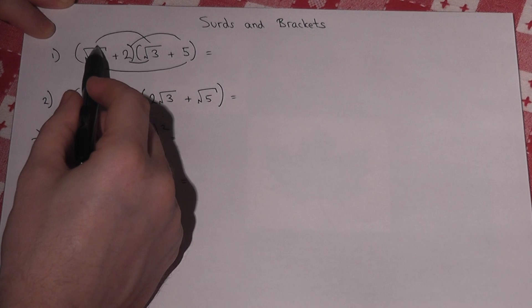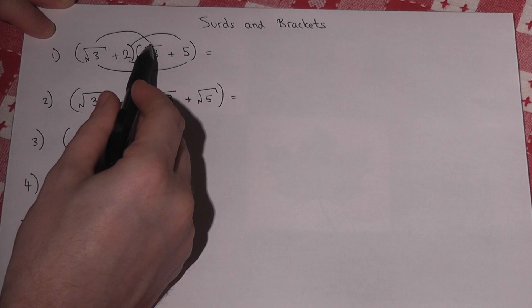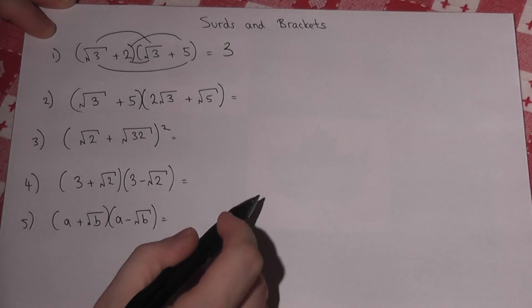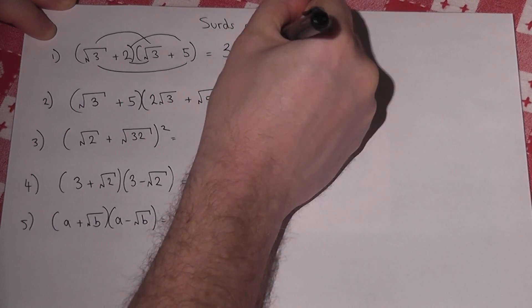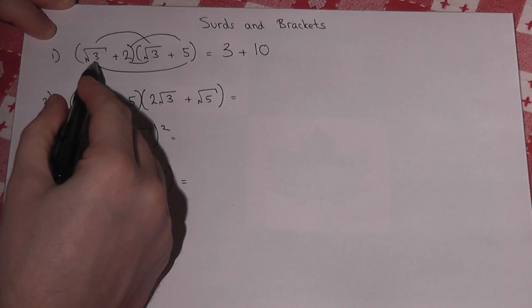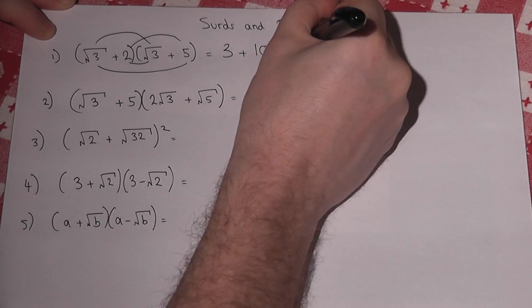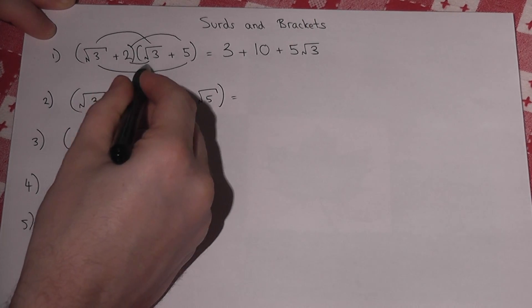So we've got root 3 times root 3. Well, root 3 times root 3 is root 9, that just equals 3. 2 times 5 is just 10. Now root 3 times 5 is just 5 root 3, and here it's just 2 root 3.